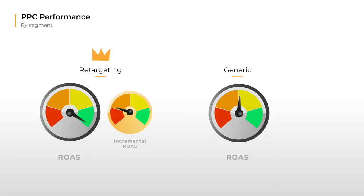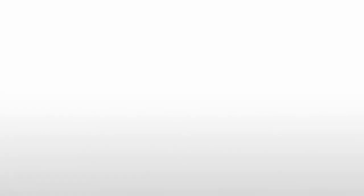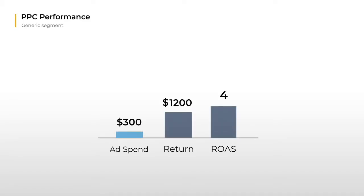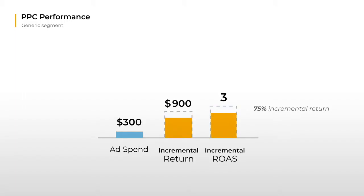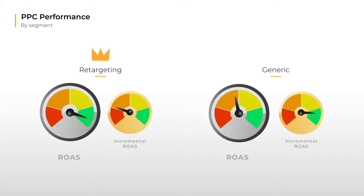Let's do the same for the generic campaign. The generic campaign has a much higher incrementality of about 75%. Hence, the incremental ROAS doesn't change as much. Judging performance by incremental ROAS reveals that the generic segment is much more important for the business than initially visible.